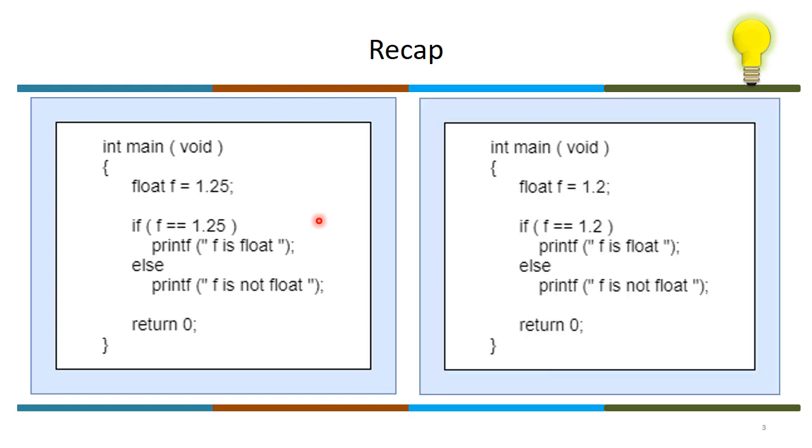The next example is the same thing but the number changes to 1.2. If you have typed in, you would have got f is not float. So why is that discrepancy in the output?